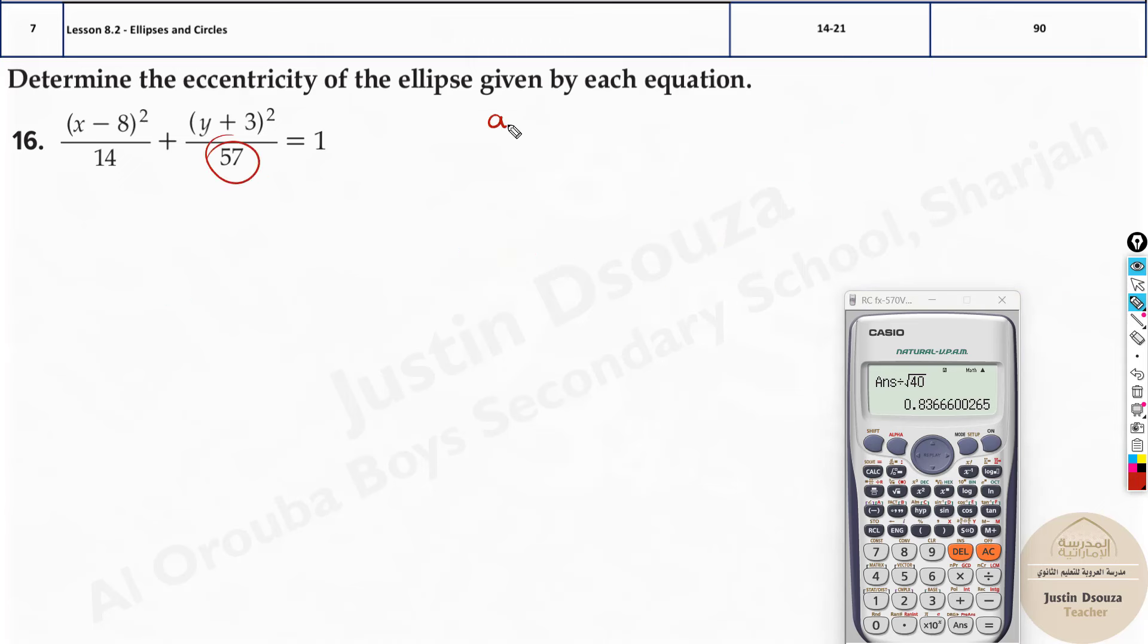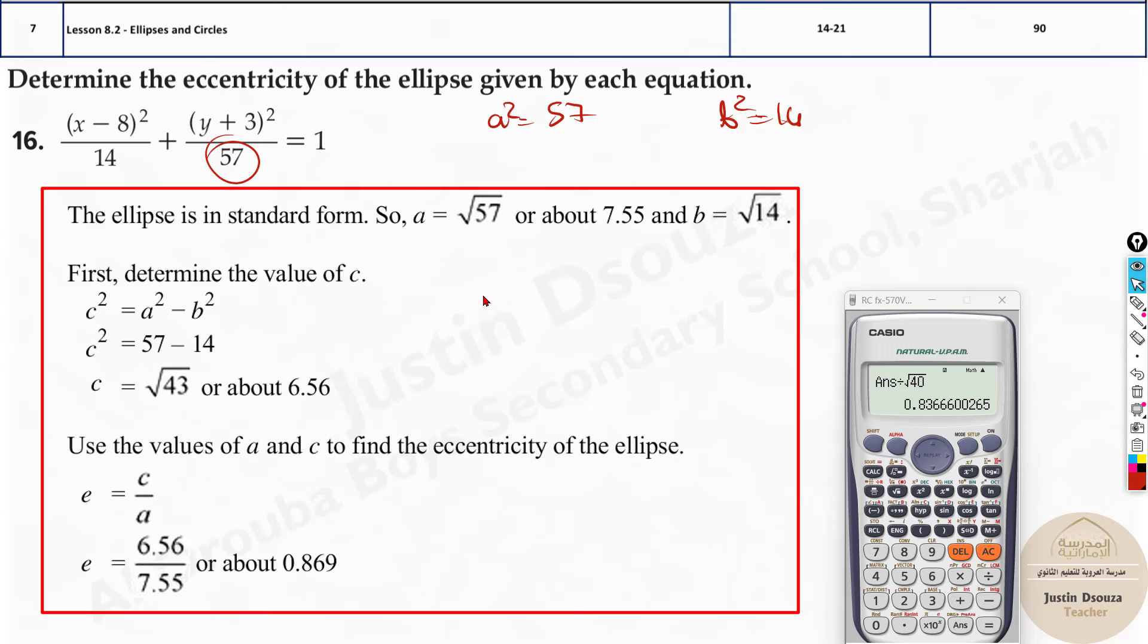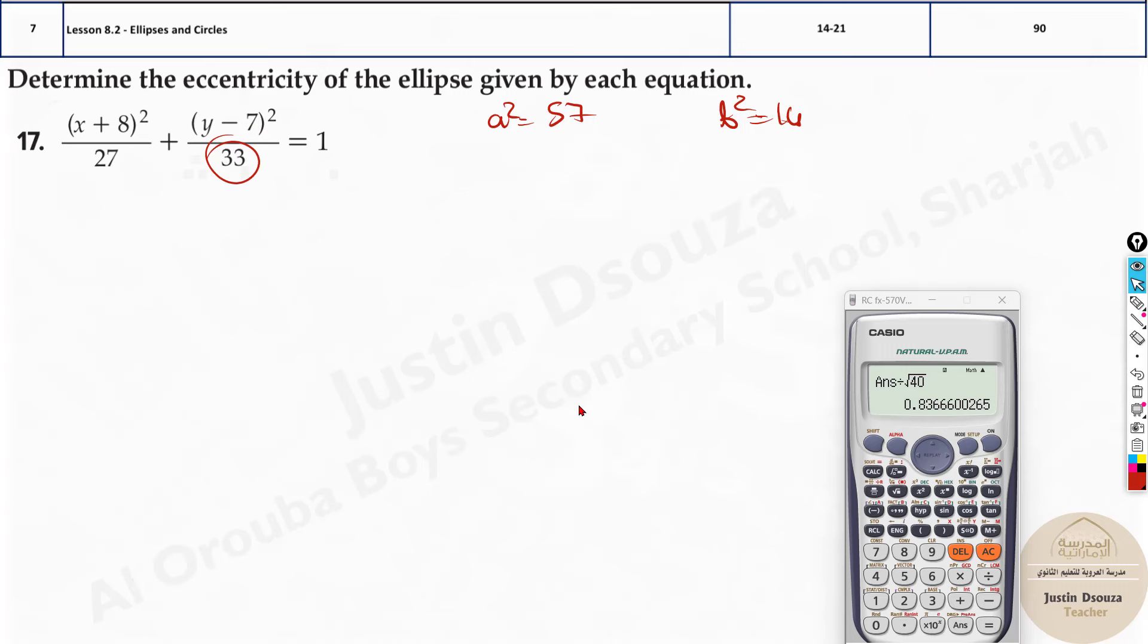Over here a squared value is 57, and b squared is 14, and then the same method. That's it. So other problems are also simple, similar.